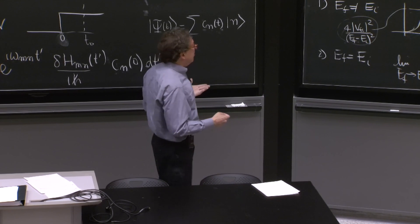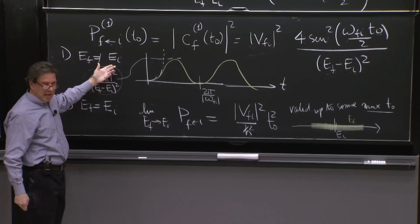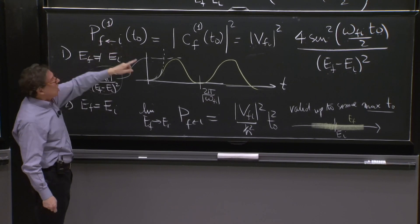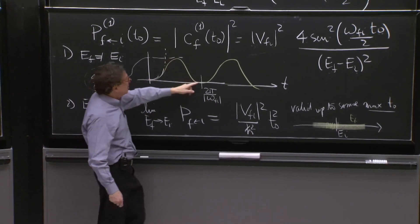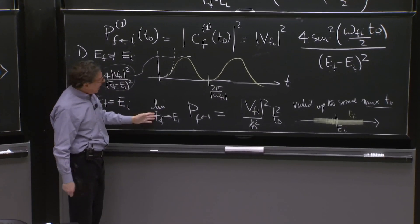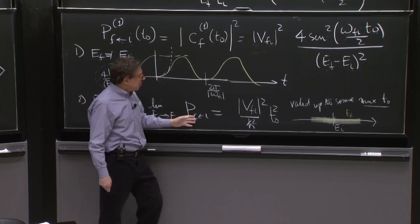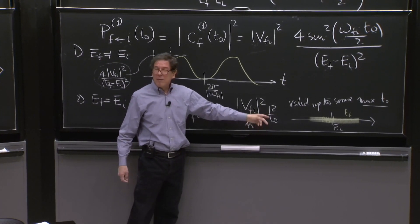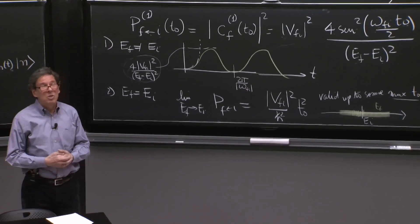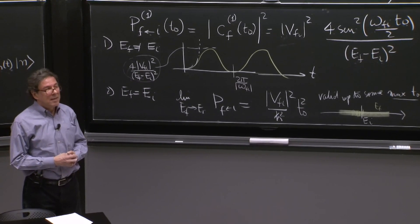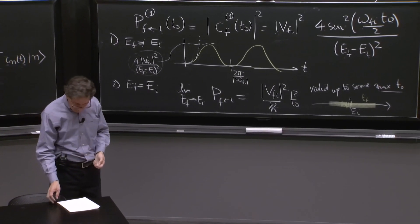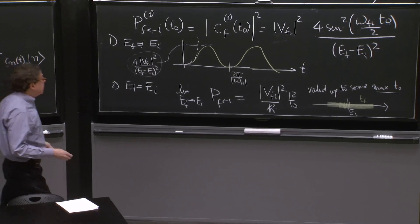So somehow, look what's happening here. When EF is different than EI, the transition probability is not linear in time. It does this. When E approaches, EF approaches EI, the probability of transition goes quadratic in time. And what we want is a probability of transition that grows linear in time. That would define a transition rate.